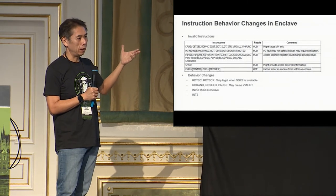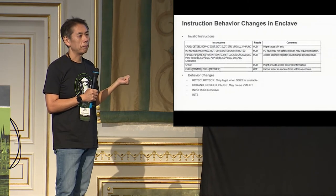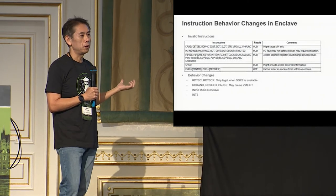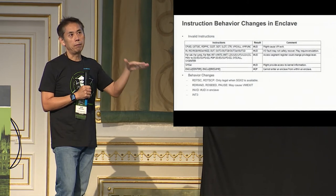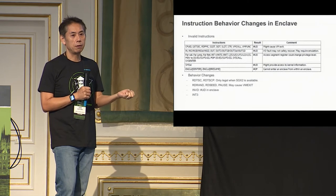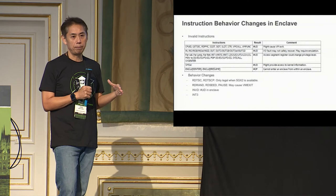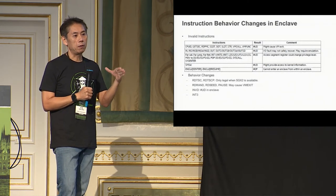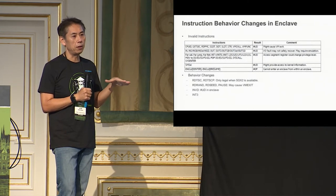When VM entry and resume happens, the processor restores the state from the enclave — that's an encrypted area — and returns back to the enclave. In that case the software doesn't need to do anything. From a VM hypervisor's point of view, you just see the VM exit and a reason — for example, an EPT violation — and you get only the necessary information to handle that EPT violation, but you don't see the register contents at the time.